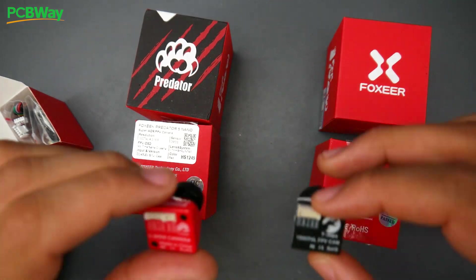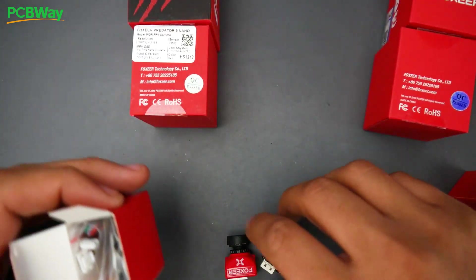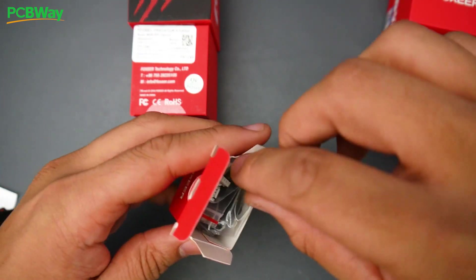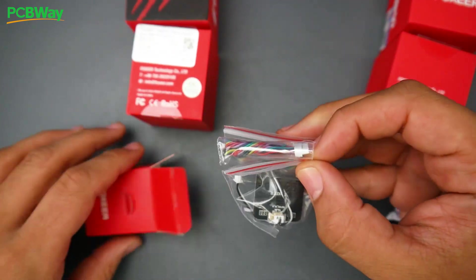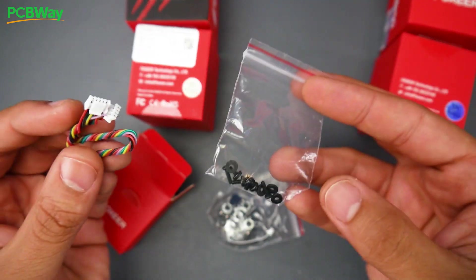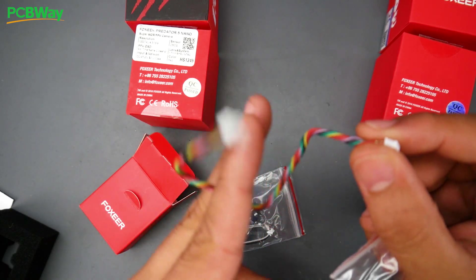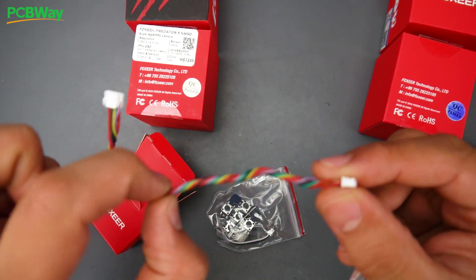And before we jump into the latency let's just take a look at some of the things they provide you in the packaging just in case if you're curious. Now for the Predator 5 Nano to be exact, you get an OSD remote, you also get some screws and some washers, and you get a connector here. More than likely you're going to have to end up cutting this up and then just soldering it to your flight controller.